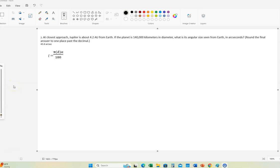All right, so this is problem number two. At its closest approach, Jupiter is about 4.2 astronomical units from Earth. If the planet is 140,000 kilometers in diameter, what is the angular size as seen from Earth in arc seconds? Round the final answer to one place past the decimal. The correct answer is 45.8 arc seconds.